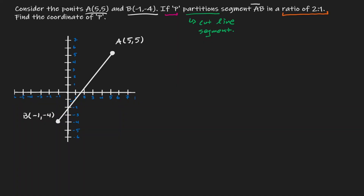If we want to cut a line segment into a ratio of 2 to 1, we can think of this as cutting the whole line segment into three equivalent pieces. Let's estimate that in our diagram. By introducing these two marks, we have cut this line segment into three equivalent pieces.